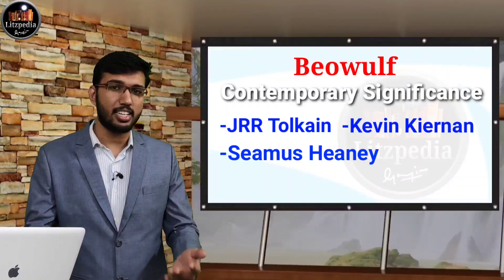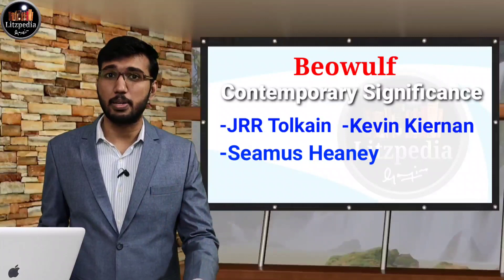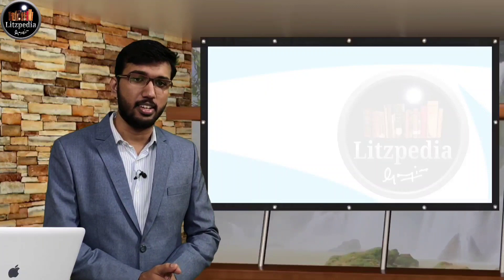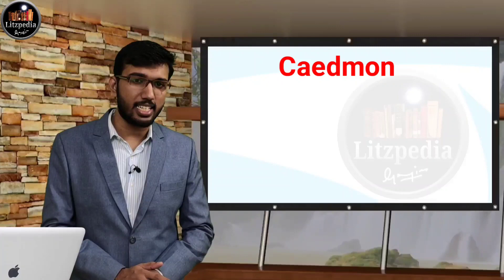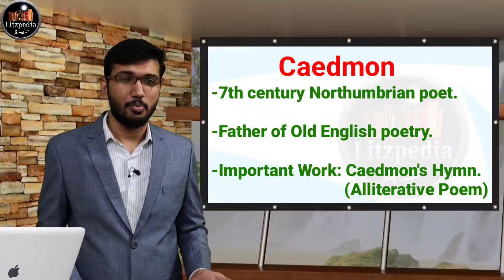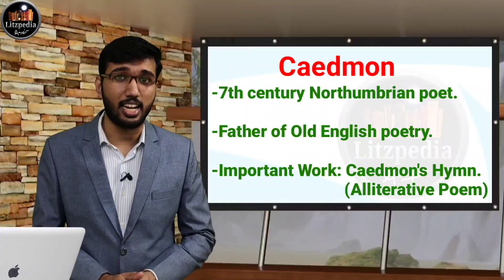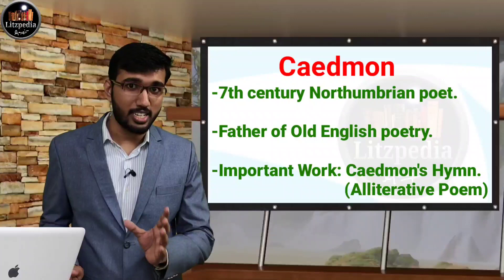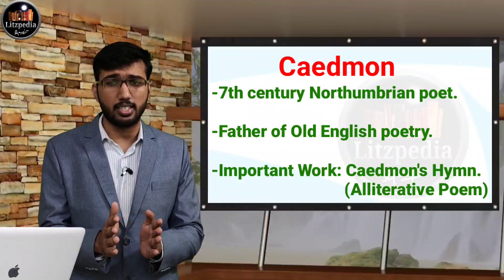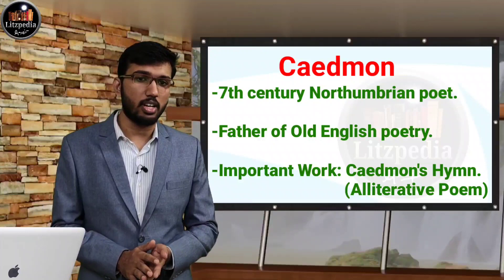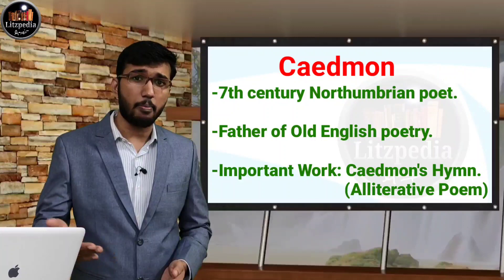Now we need to move on to the major writers during the Old English period. The first figure is Caedmon. Regarding Caedmon, we need to know that he is a 7th century Northumbrian poet and he is also called the father of English poetry. But even though he has this name, we don't know much literary work regarding him. He was a brother at the monastery of Whitby. The details of his life are known from Venerable Bede's Ecclesiastical History of English Race. He was actually known to be an illiterate cowherd, and a miracle happened in his life later, as written in the Ecclesiastical History.